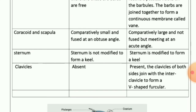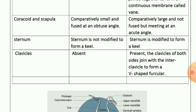Because Ratitae feathers lack hooks on the barbules, the barbs are free. In Carinate, feathers are arranged in tracts called pterylae, which are separated by featherless tracts called apteria. These feathers possess hooks on the barbules, and the barbs are joined together to form a continuous membrane called a vane.